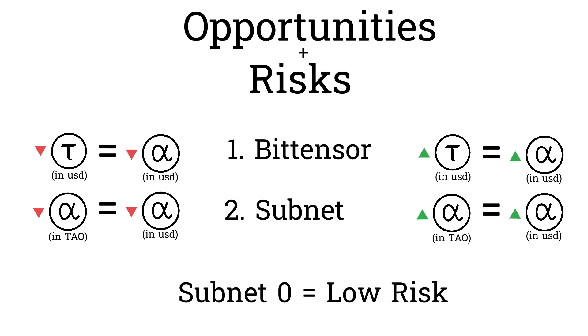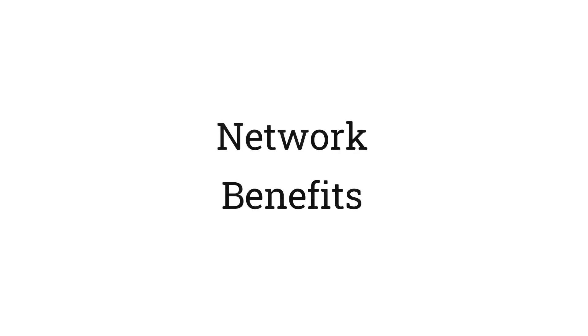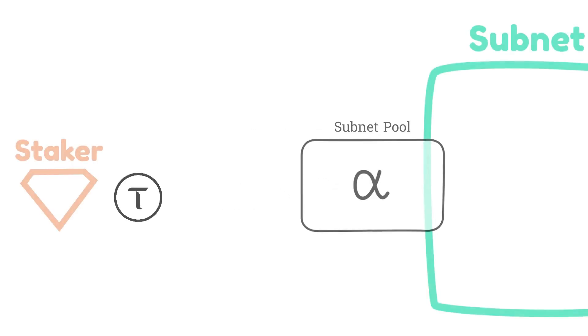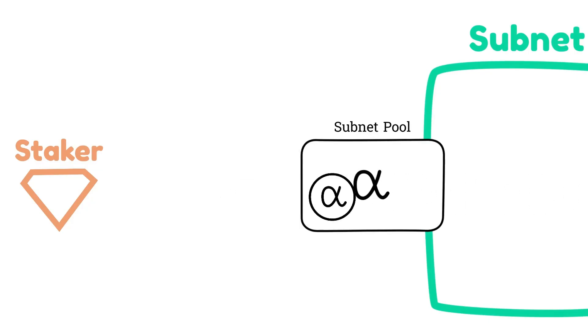Alpha staking allows stakers to increase their rewards by positively contributing to the network, a revolutionary way to allow stakers to contribute to the BitTensor network. By purchasing alpha in a subnet, you're showing support for that subnet, but you're also slightly increasing the value of that subnet's alpha token.